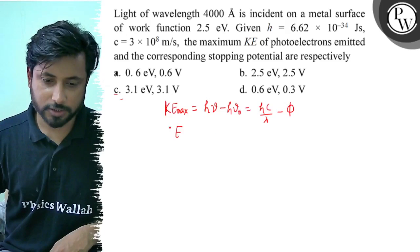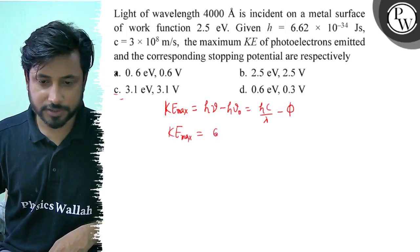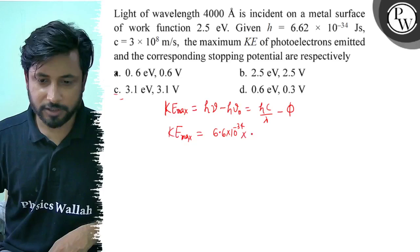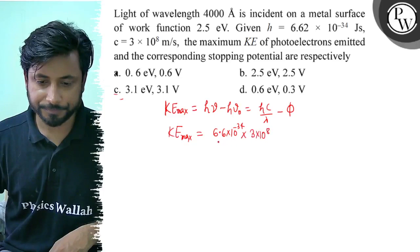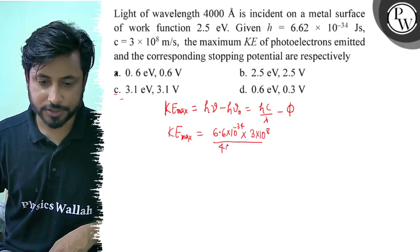KEmax equals... H value is 6.6 into 10 to the power minus 34, c value is 3 into 10 to the power 8, lambda value is 4000 into 10 to the power minus 10.